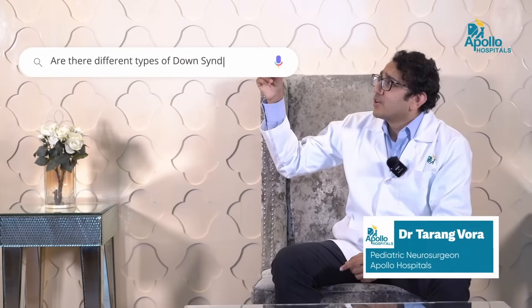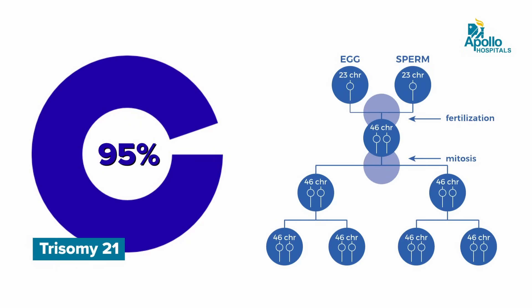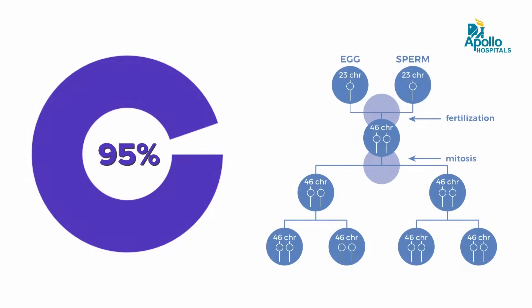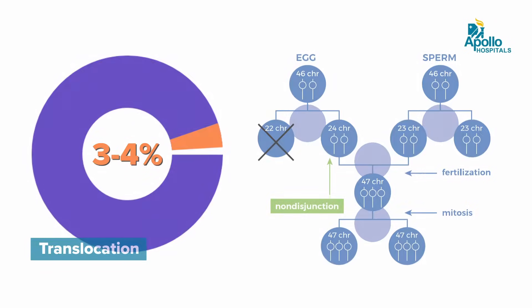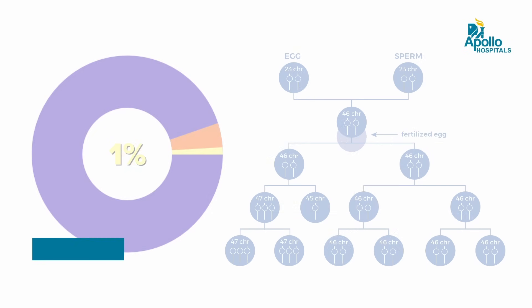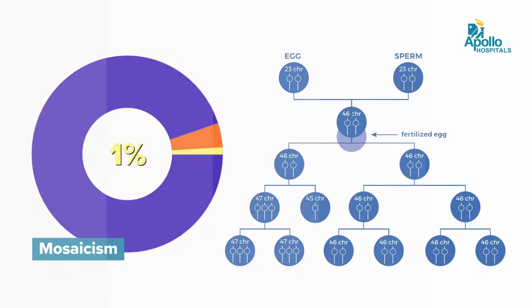Are there different types of Down syndrome? Yes, there are three types of Down syndrome. The first type is the normal variation, that is trisomy 21, which is present in 95% of the population. The second type is the translocation type, which is present in around 3 to 4% of the population. And the last and the rarest type of Down syndrome is the mosaic pattern.